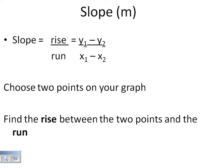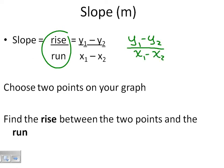Today we'll be working with graphing linear equations and slope. Slope is rise over run — the rise of your graph divided by the run. This can also be written as y1 minus y2 over x1 minus x2, where you have two points (x1, y1) and (x2, y2).